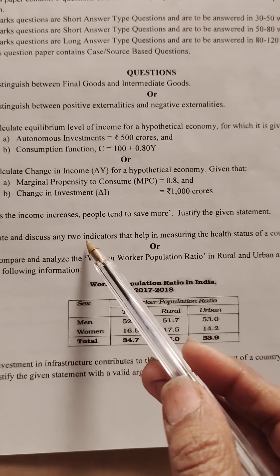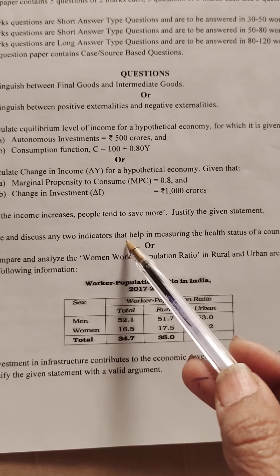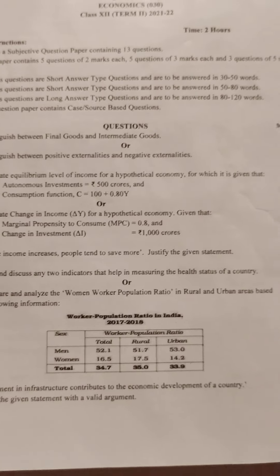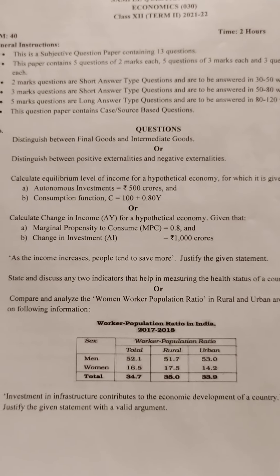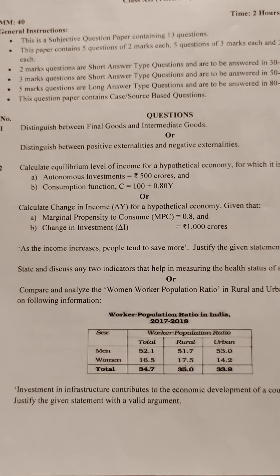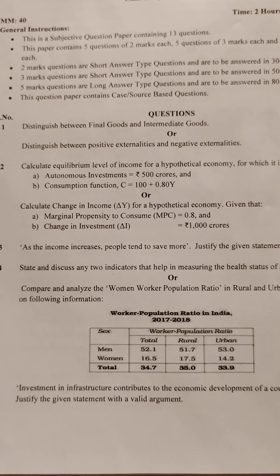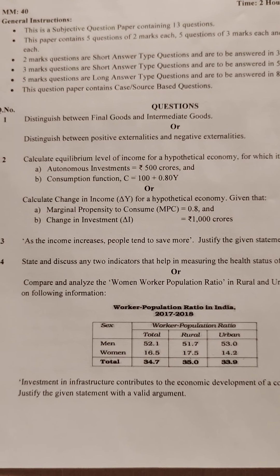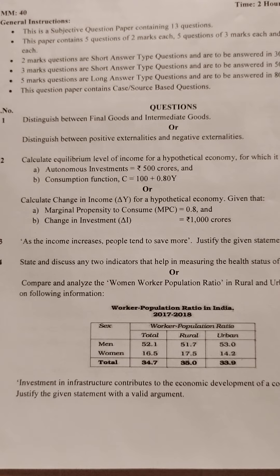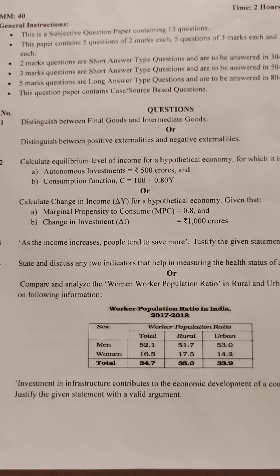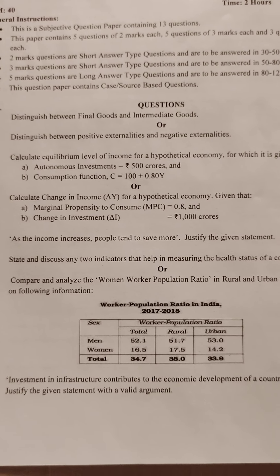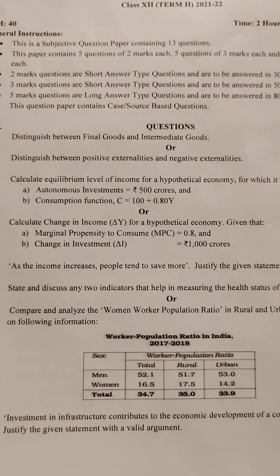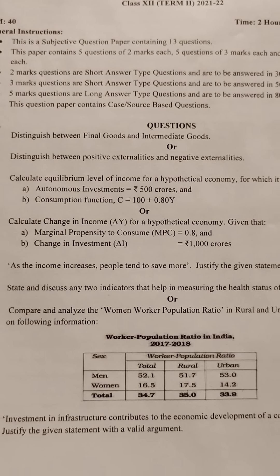State and discuss any two indicators. In this, you can also write infant mortality rate as the first indicator. Infant mortality rate indicates the number of children that survive the first year of their life — that's the answer given. And the second is the literacy rate. Literacy rate measures the proportion of literate population in the age group of 7 years or above.